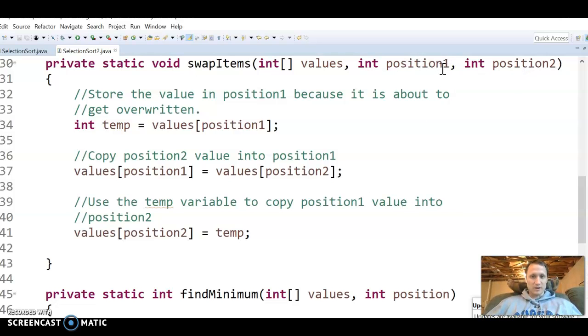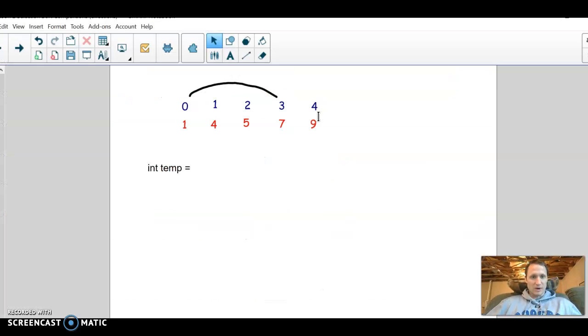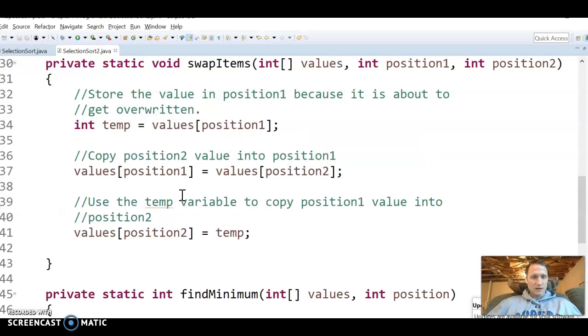And in code from yesterday, if you want to check your answer to that one, it looks like this where you set—we're swapping position one and position two. There are variables that come in, so those would be the indexes. In my example, that would be zero and three. So we set temp to be position one, and then we set position one to be whatever position two is. And then after that, we set position two to be what we stored in that temp variable. So that should allow us to swap the items.